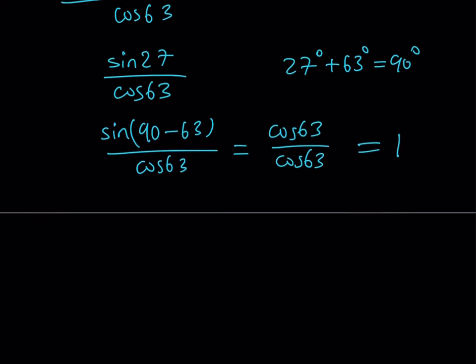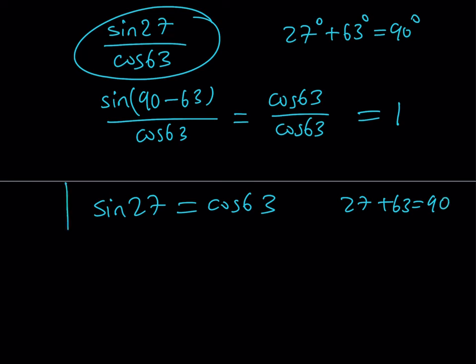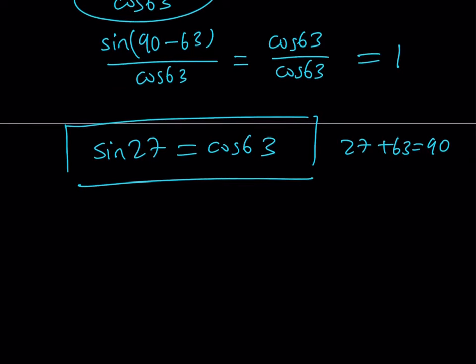So this whole expression basically simplifies to 1. You could also do the following. Sine 27 is the same as cosine 63 because 27 plus 63 is 90 degrees. And you can draw a right triangle with these angles and just verify this identity.